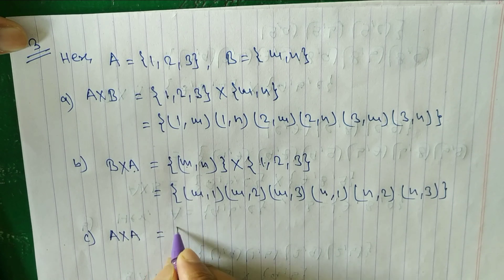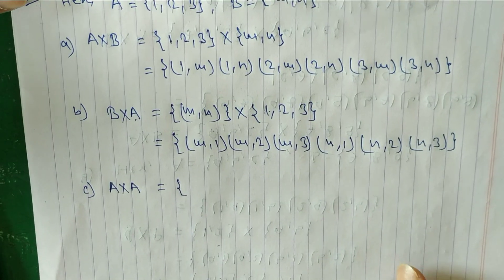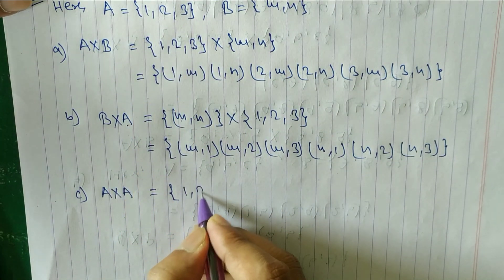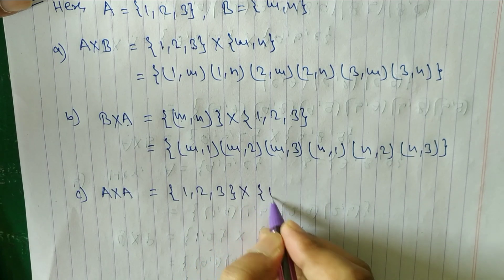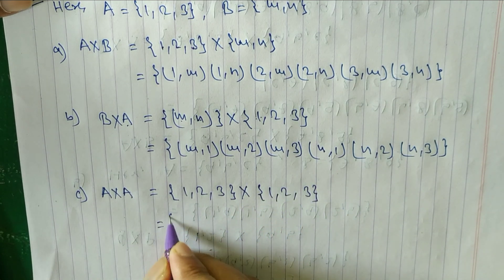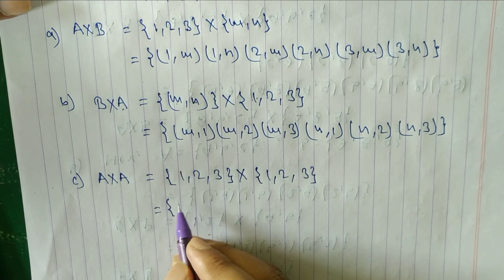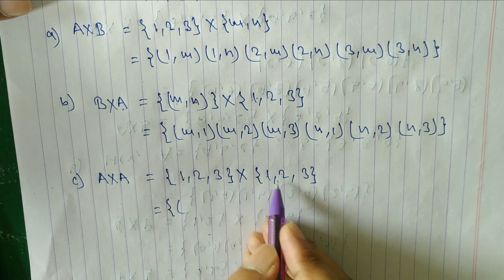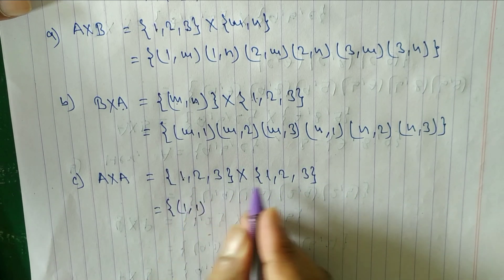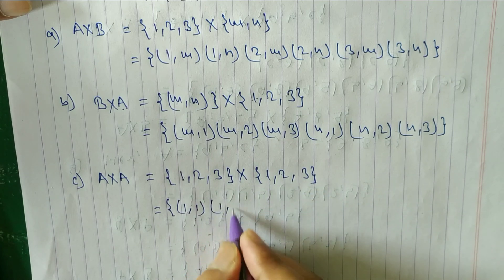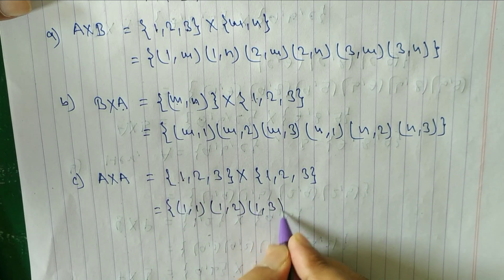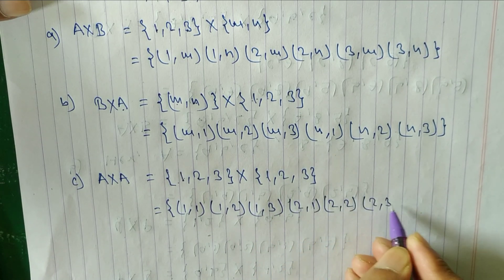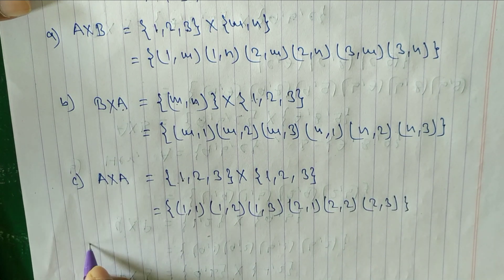For part c, a×a: a = {1,2,3} cross a = {1,2,3} gives (1,1), (1,2), (1,3), (2,1), (2,2), (2,3), (3,1), (3,2), (3,3).